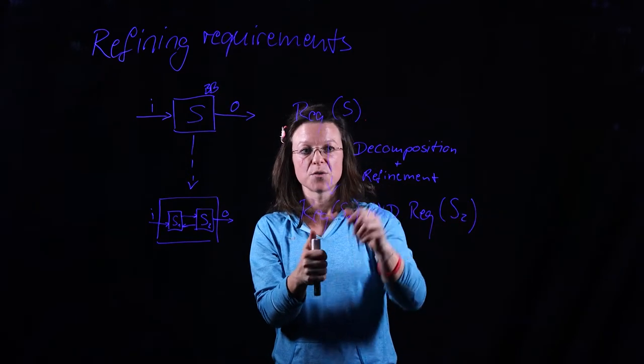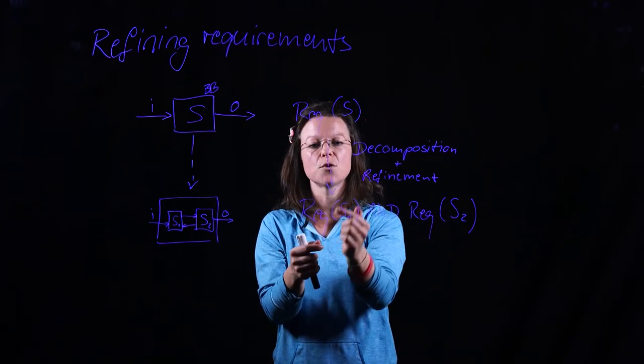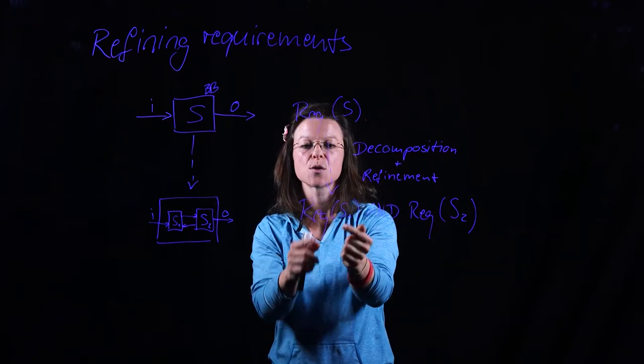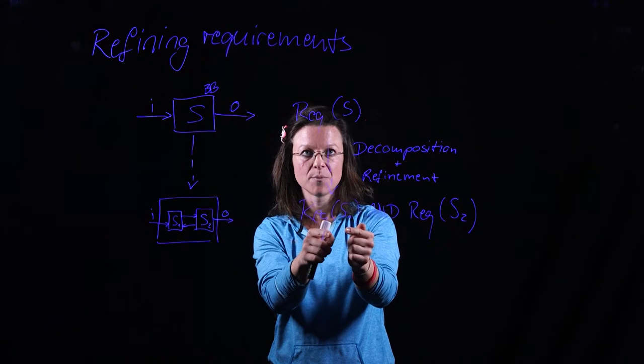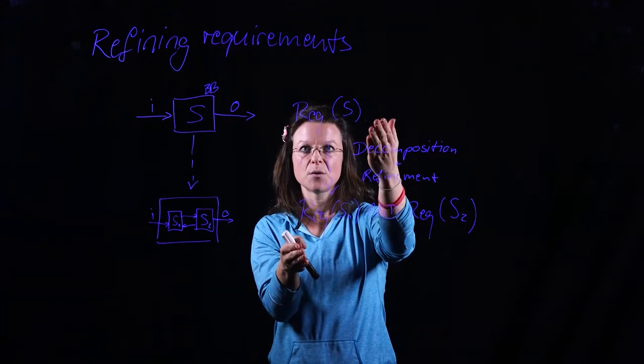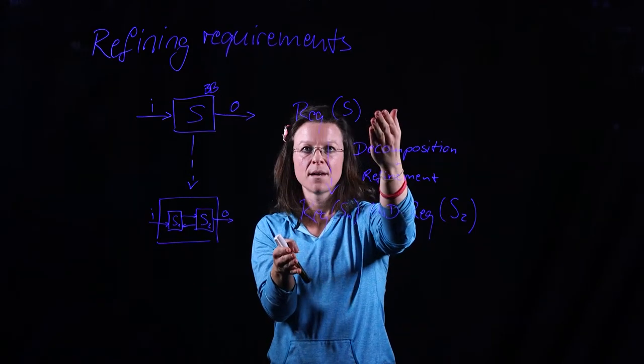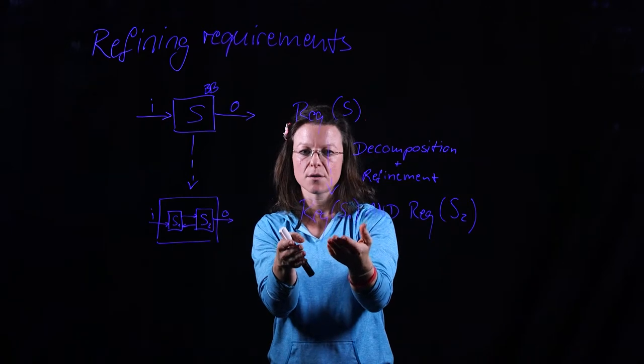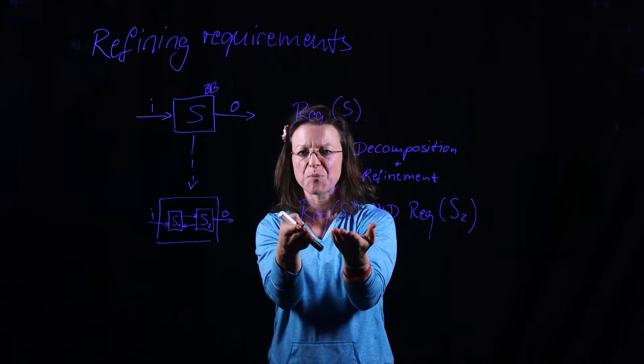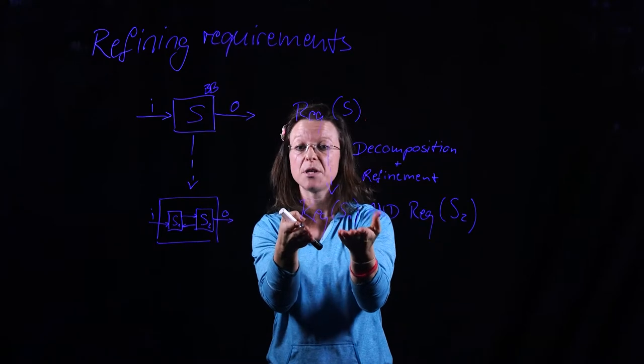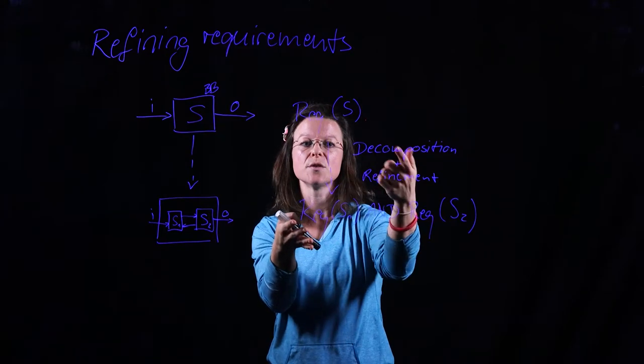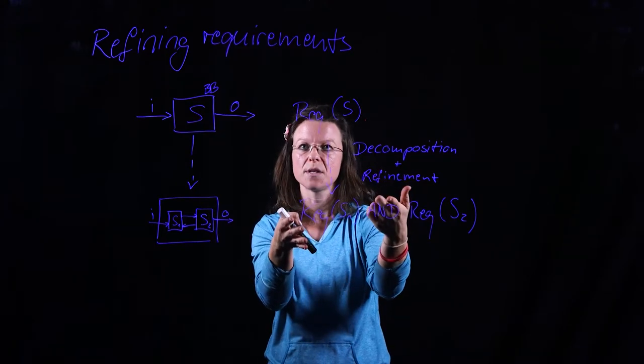And the refinement part of this is what information do I have to add on so it makes sense on a subsystem level. Because if I only say if I brake the car, the car needs to slow down, then the object brake pedal doesn't even appear in the requirement. So therefore I also need to add information on to make more sense.